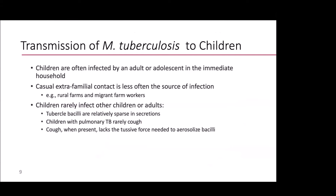Children are most commonly infected by an adult or adolescent in their immediate household. We do see extra-familial contact leading to TB infection and then disease, but this is less common. This can happen with migrant farm workers on farms, often in rural parts of the country where we don't see a lot of TB. Unfortunately, when you don't have a source case and you don't see a lot of TB, it often goes missed for quite a long time, and there can be significant morbidity and mortality associated with that.